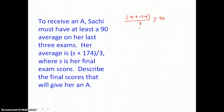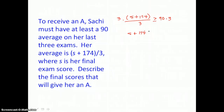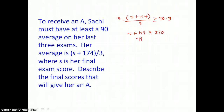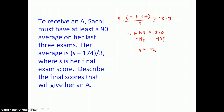This is the inequality we want to solve. The first thing to do is clear the denominator by multiplying both sides by 3. That's a positive 3, so we don't have to reverse the order of the inequality. The 3s cancel on the left, leaving S plus 174 is greater than or equal to 270. Subtracting 174 from both sides, we get S is greater than or equal to 96. So Sashi must score 96 or higher on the final exam to receive an A.